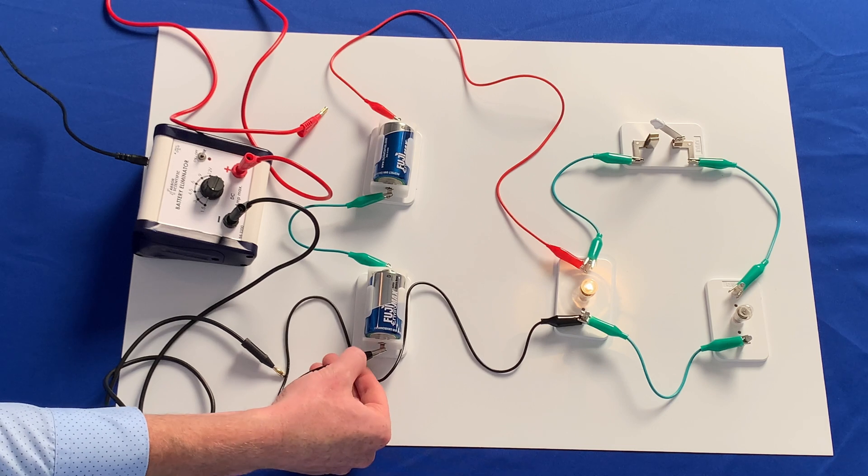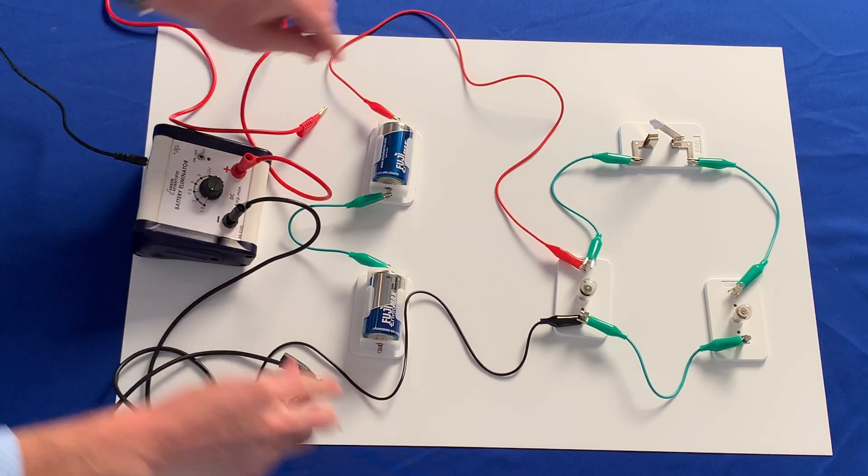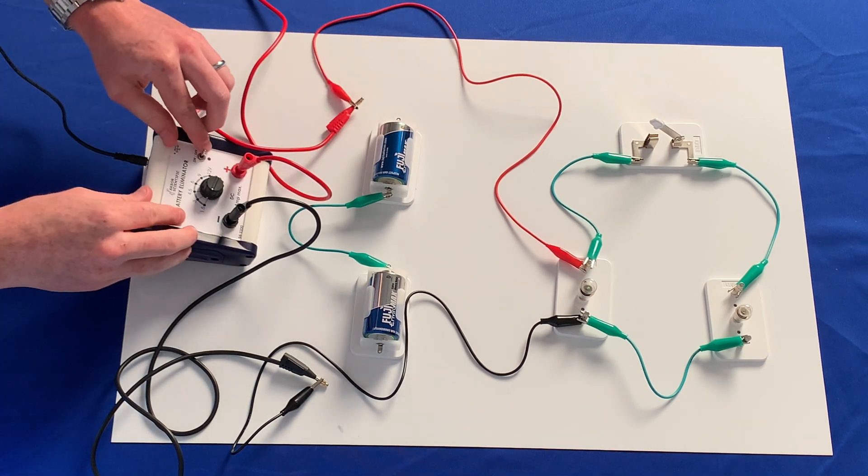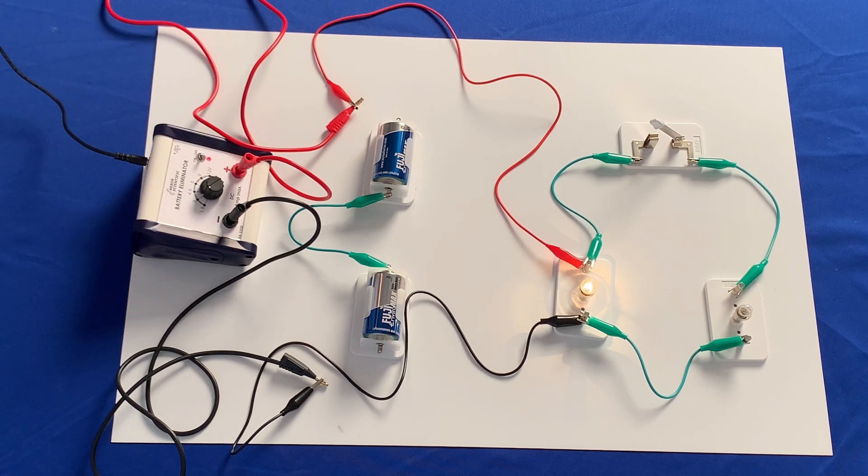The battery eliminator can seamlessly take the place of traditional batteries and holders for basically any experiment that requires voltages between one and a half volts to 12 volts, because it has six different settings that all use common battery voltages.